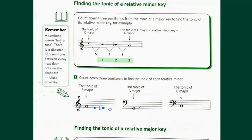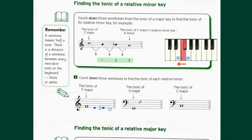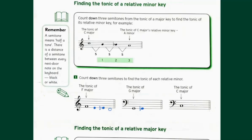Let's do the same for G major — count three steps down to find the relative minor. From G we go to G flat (also called F sharp), then F, then E. Just make sure you don't count the G itself. The three steps go below G: G flat, F, then E. So E is the tonic of the relative minor of G major, which is E minor.